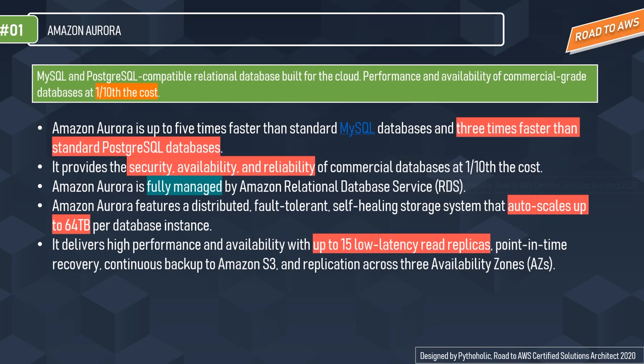The first thing you need to understand about Amazon Aurora is that it's a MySQL and PostgreSQL compatible relational database built for the cloud. Amazon Aurora is up to five times faster than standard MySQL databases and three times faster than standard PostgreSQL databases, and it provides the security, availability, and reliability of commercial databases at one tenth the cost of traditional databases.